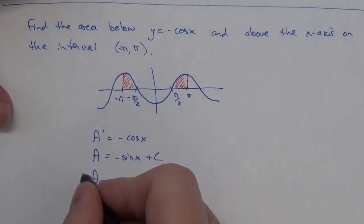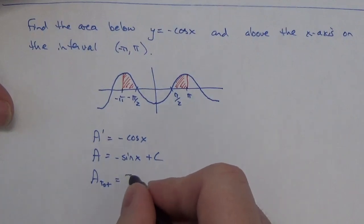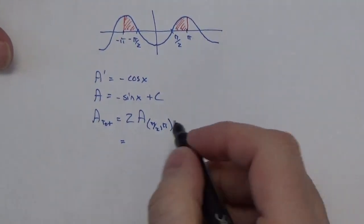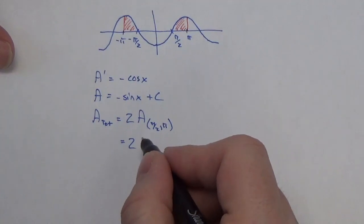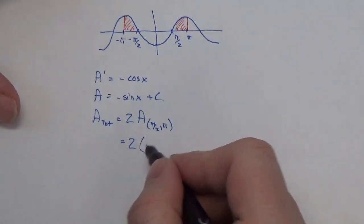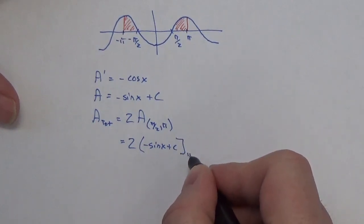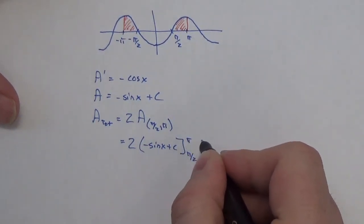Now, we're going to evaluate that, and actually, to figure out the area, the total area that I'm looking for, I'm going to take two times the area function evaluated between pi over 2 and pi. Okay, and so that is going to look like this. It's going to be two times negative sine of x plus c evaluated from pi over 2 to pi.